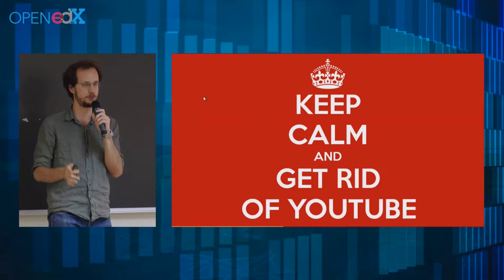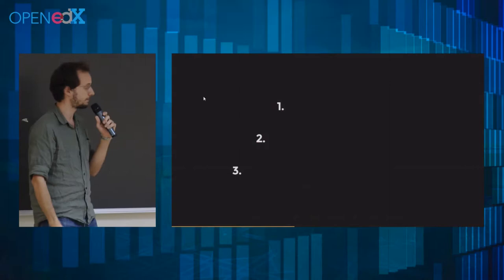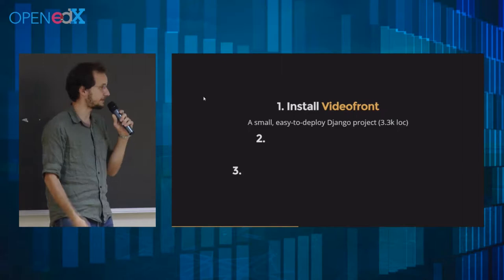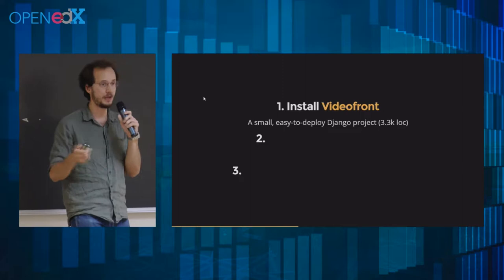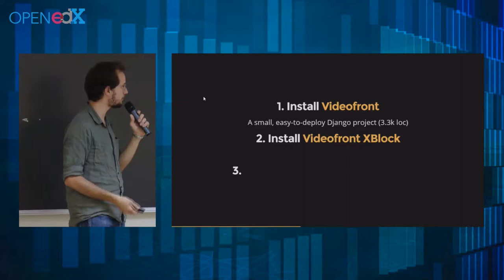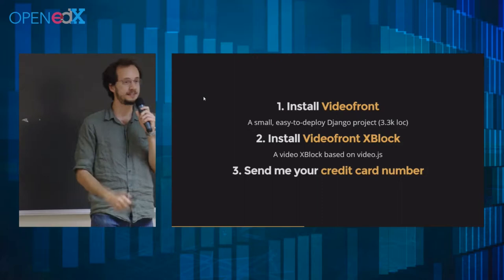It's going to be fine. Get rid of YouTube. All you have to do is three simple things. First, install VideoFront. It's a new Django project, about 3,000 lines of code, that provides an API where you can upload your videos. Then plug into it with a custom XBlock called the VideoFront XBlock, which is also open source. It's based on VideoJS. And the third thing is — everything is free.